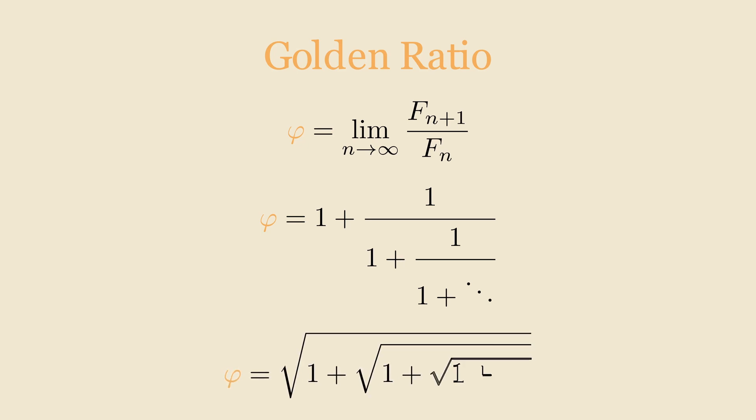We just saw that it can be the ratio of the Fibonacci numbers as it goes to infinity, or it could also be this infinite continued fraction with only ones as coefficients. Alternatively, it could be expressed as this infinite sum of nested square roots.